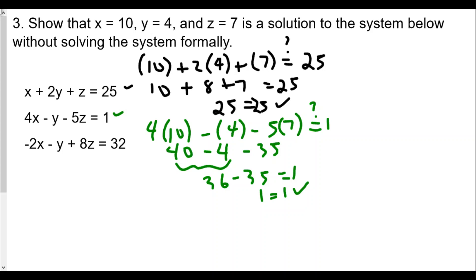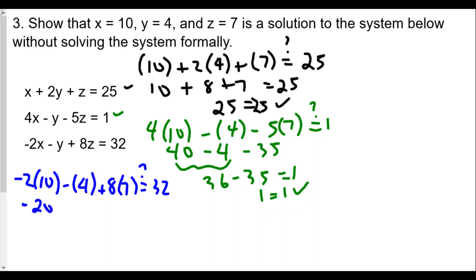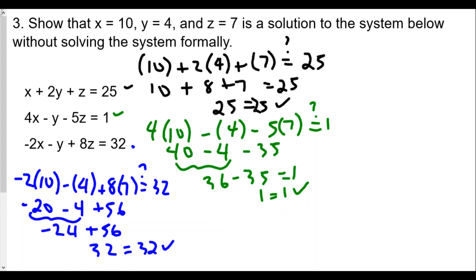For the last equation: negative 2x minus y plus 8z equals 32. Plugging in: negative 2 times 10 minus 4 plus 8 times 7 — will that equal 32? We get negative 20 minus 4 plus 56, which is negative 24 plus 56, which equals 32. So 32 equals 32 — it works. Yes, this is a solution to the system of equations.